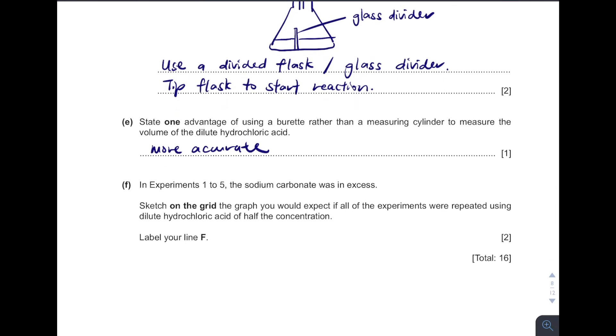Then, you see, experiment 1 to 5, the sodium carbonate was in excess. Sketch on the grid of the graph you would expect if all the experiment were repeated using acid with half the concentration. With half the concentration, what happened? When the concentration, we know that formula is N equals to CV. Given the volume stay constant, so what happens if the concentration decrease by half? The numbers of moles will also get decreased by half. When the moles of the acid get decreased by half, so which means the moles of the gas produced will also get decreased by half. So which eventually, the volumes of the gas produced will also get decreased by half.